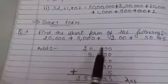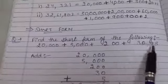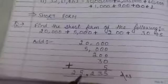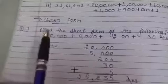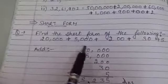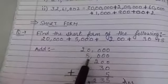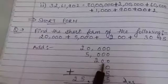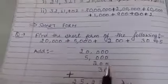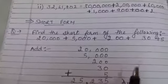The short form of this expanded form will be just simply add this number and we will be getting our short form. So, let's add it. First number is 20,000. Now, next is 5,000. Next is 200. Next is 30. And next is 5.